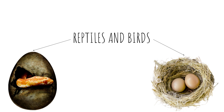Reptiles and insects produce leathery eggs, as seen on the left, while birds and turtles produce eggs with high concentrations of calcium carbonate in the shell, making them hard, seen on the right. These animals classify as Oviparous.